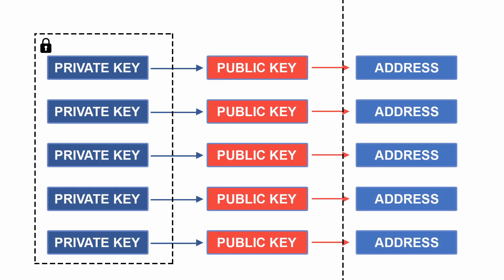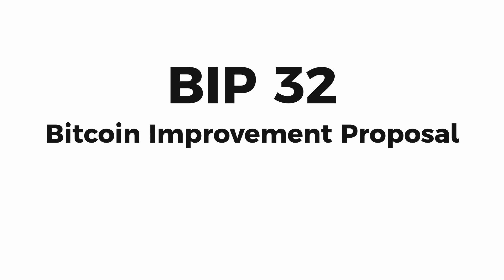Multiple private keys can be generated, which will correspondingly generate many public keys and Bitcoin addresses. Now we can use different combinations of private keys, public keys, and Bitcoin addresses for different transactions, which makes it difficult to trace your transactions. You can generate as many private keys as you want — that would be a good point — but the major problem is the more private keys you generate, the more difficult it becomes to remember and store these private keys safely.